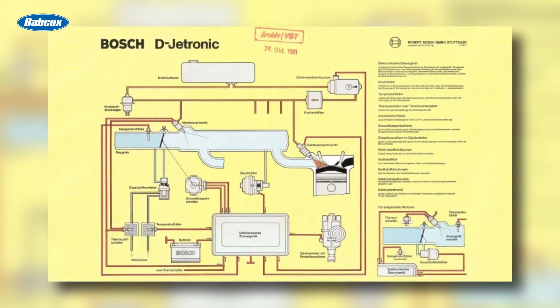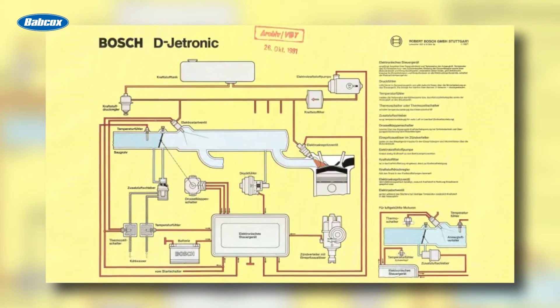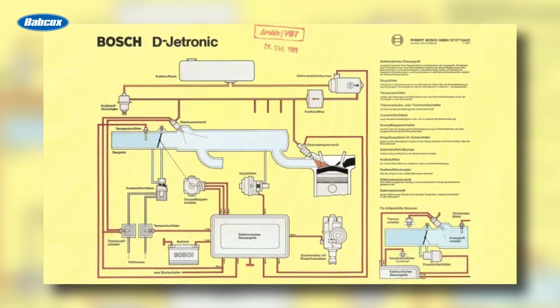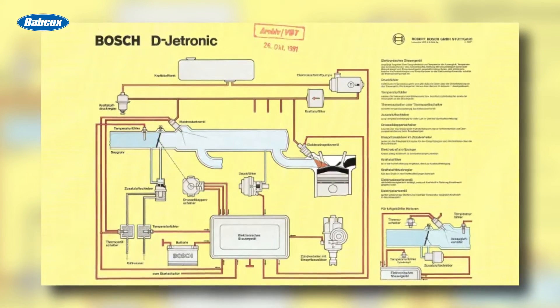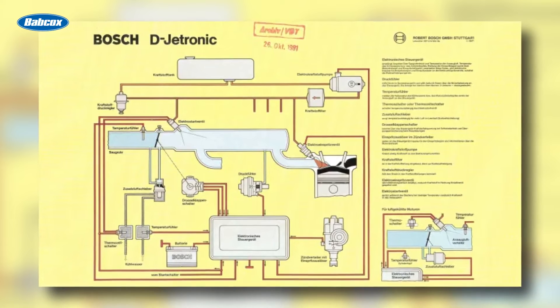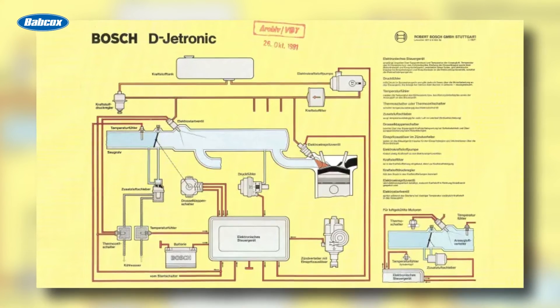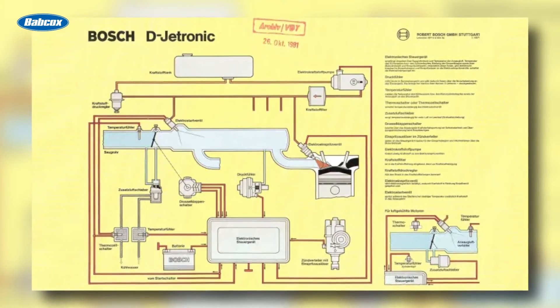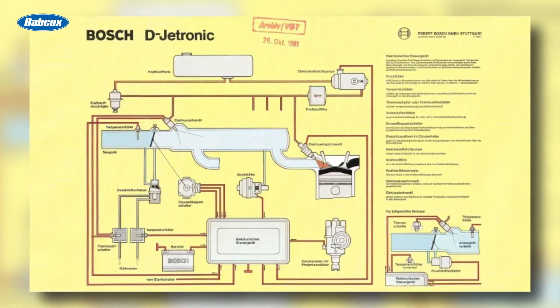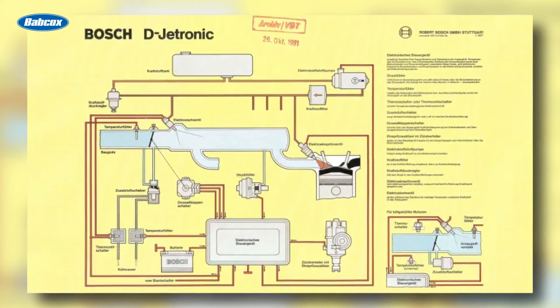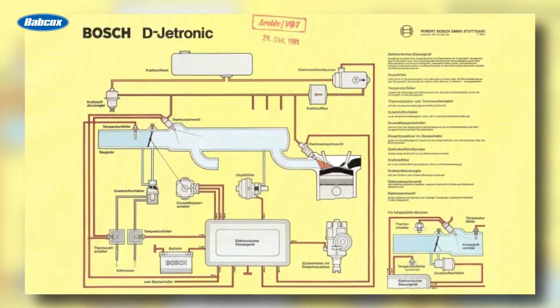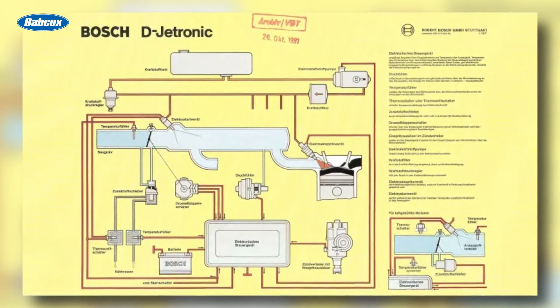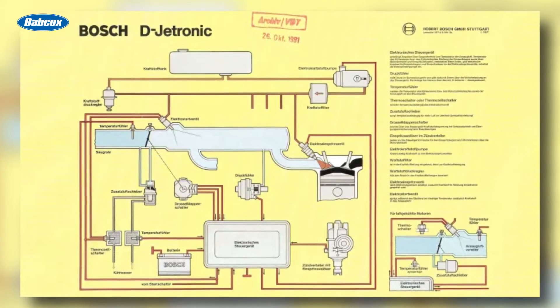It lacked any diagnostic capabilities but did usher in the world of computer controls. In 1975, Bosch and Bendix debuted their fuel injection system to help with tailpipe emissions. While these were analog systems, they started to include some very rudimentary diagnostic capabilities.